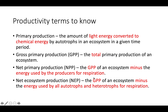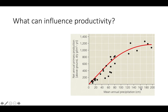Whereas with net ecosystem production, we subtract the amount of energy used by both the autotrophs and the heterotrophs for respiration. Looking at factors that influence productivity: light limitation means that on a cloudy day you will have less photosynthesis than on a sunny day, because there is less light energy available for producers to convert to chemical energy.